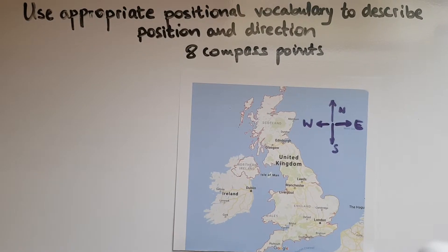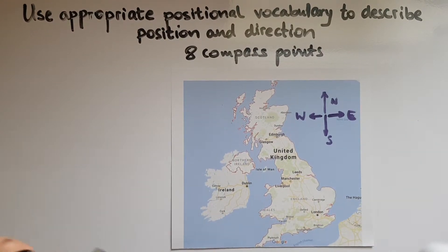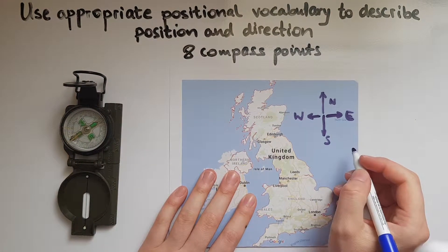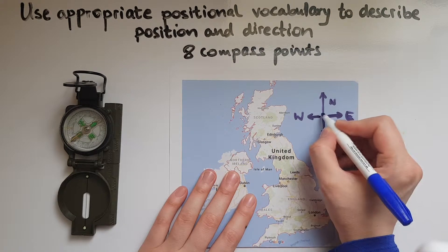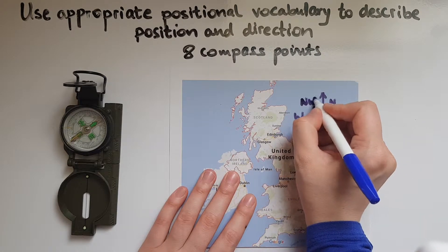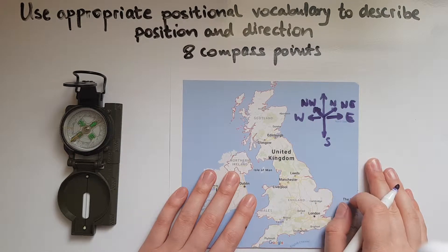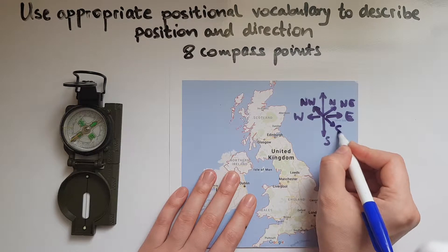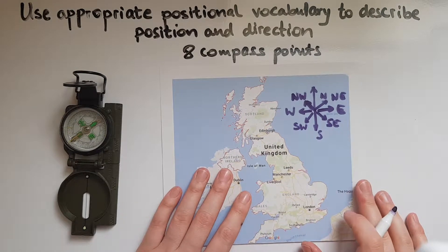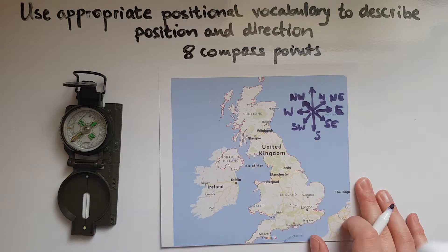So what are the other four points? We've got four points already — what are the other four? The other four points stand in between these four. So between north and west is north-west. Between north and east is north-east. Between south and east is south-east. And between south and west is south-west. So what we're saying first is whether it's north or south and then either east or west.